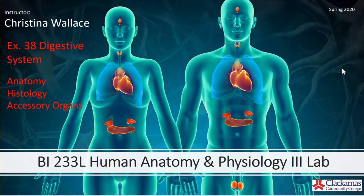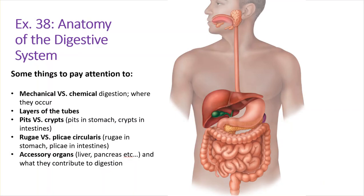We're going to talk about the gross anatomy, anatomical structures, and the function of those structures. Then we're going to look at histology of six different GI tract and accessory organs. You want to think about where mechanical versus chemical digestion is happening. Mechanical is somehow grinding food down, chewing food into smaller chunks — your stomach and your teeth do that.